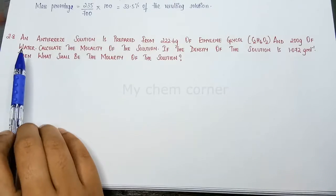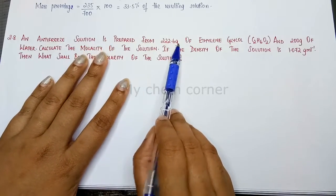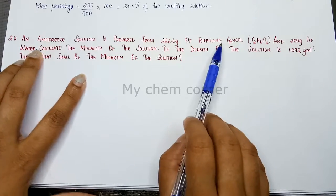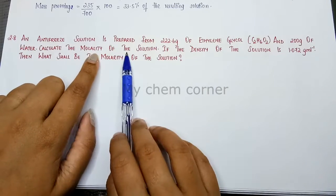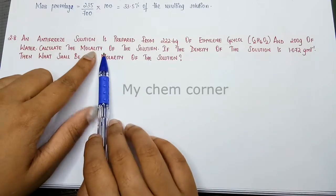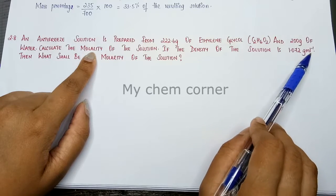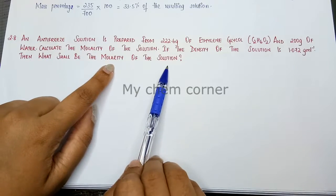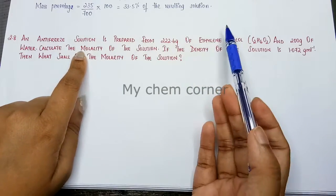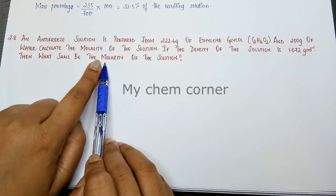Question 2.8: an antifreeze solution is prepared from 222.6 grams of ethylene glycol and 200 grams of water — there's the solute and the solvent. Calculate the molality of the solution. The density of the solution is given as 1.072 grams per mL; from that, we can also calculate the molarity.